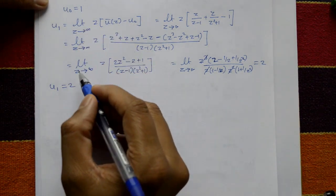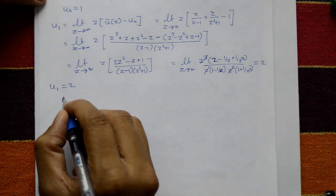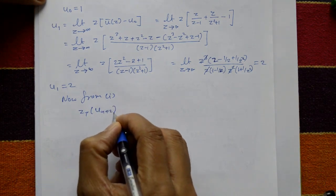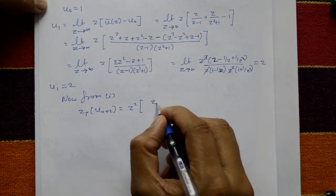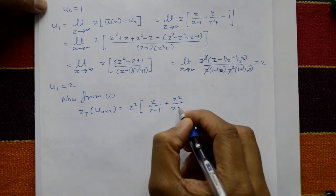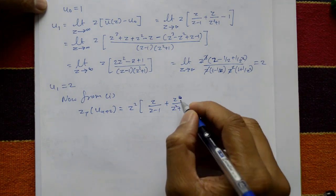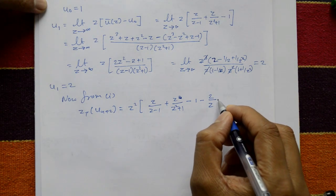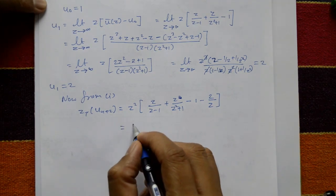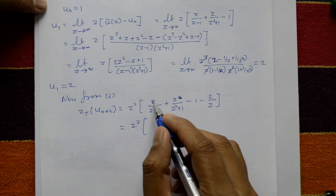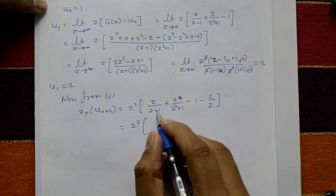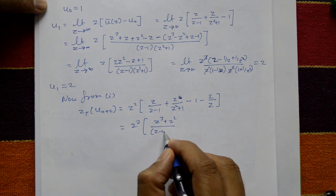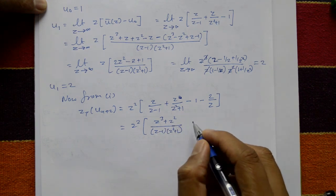Now substituting u(0) and u(1) back into equation number one: Z{u(n+2)} = z² · Ū(z) - u(0) - u(1)/z. This equals z² · [z/(z-1) + z/(z²+1)] minus 1 minus 2/z. Combining the positive terms with common denominator gives (z³ + z²) / [(z-1)(z²+1)] minus 1 minus 2/z.